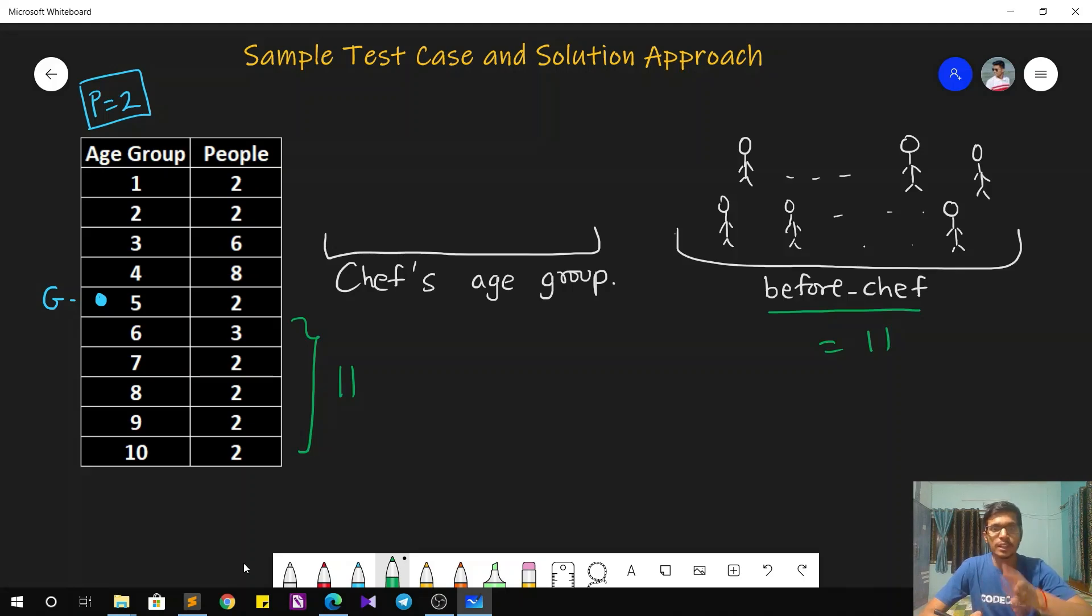Also now the next turn is of chef's age group. So as you can see that in age group 5, total of 2 people are present. So I can draw 2 people over here. Now the question is that who is going to get vaccinated first because chef is one of these people, right? So if chef gets vaccinated first, then it will take minimum number of days. But if in chef's age group, if chef is the last person to get vaccinated, then it will take maximum number of days.